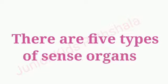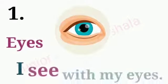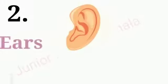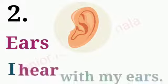There are five types of sense organs. First is eyes — I see with my eyes. Second is ears — I hear with my ears.